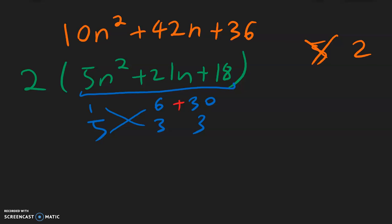So let's try something different. Let's try 1 and 5, and then 3 and 6. So 1 times 6 is 6. 5 times 3 is going to be a 15, which is going to be positive because that's a bigger number. And then to get positive 21, let's make the 6 a positive. And so that is positive 21.